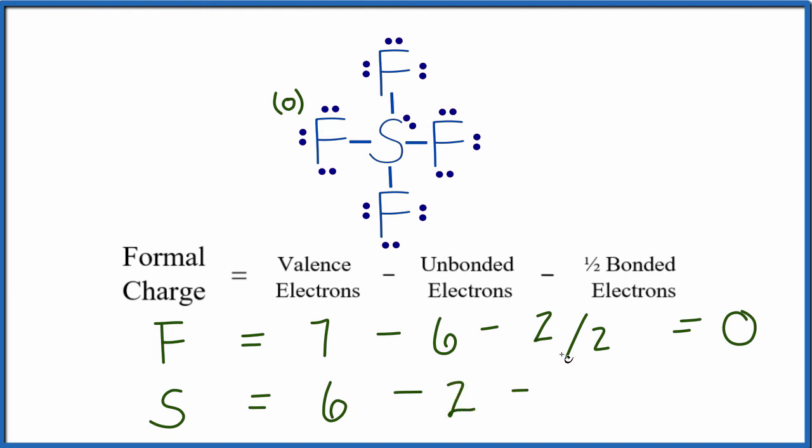Subtracting from those the bonded valence electrons, one half of them. So let's take half of 2, 4, 6, 8. And we have 6 minus 2 is 4, 4 minus 4 is 0. So the formal charge on this sulfur is 0 as well.